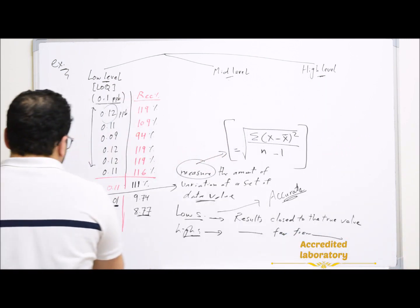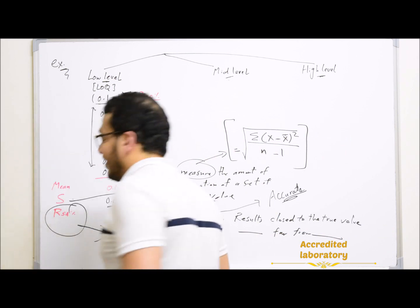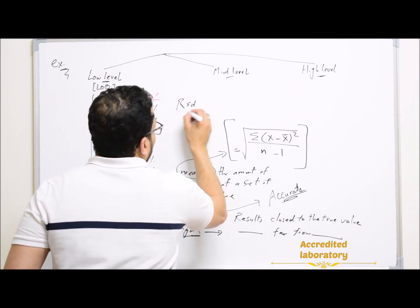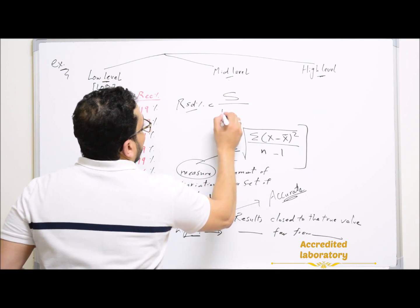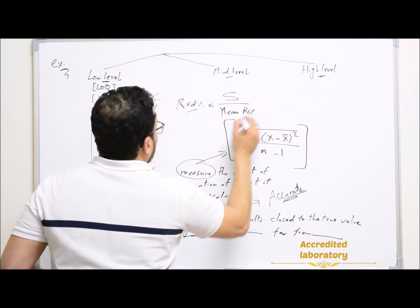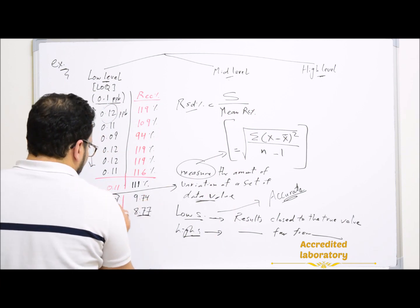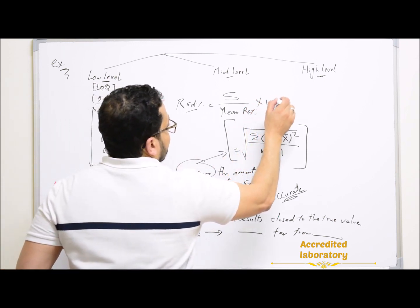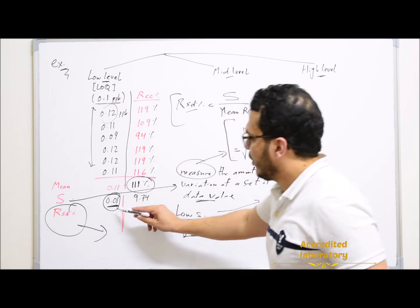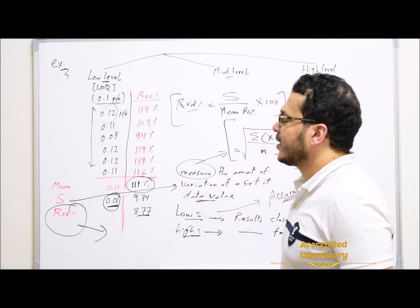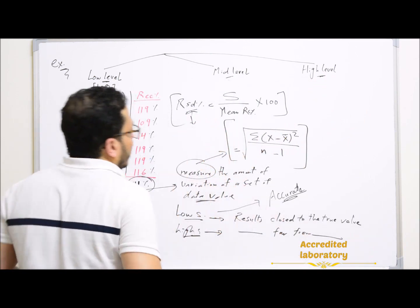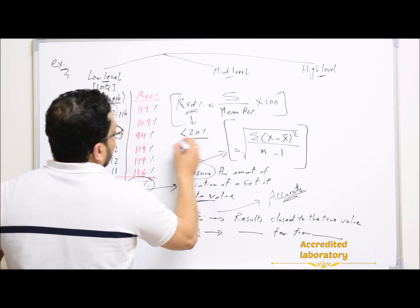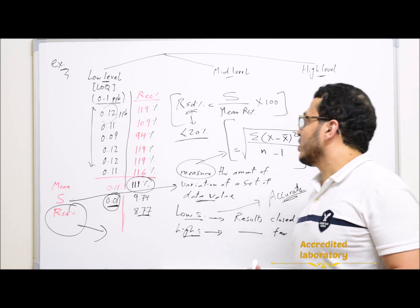Then we will calculate relative standard deviation, which is used to evaluate repeatability. Relative standard deviation equals standard deviation divided by mean recovery, multiplied by 100. According to our guideline, it should be less than 20% — it should not be higher than 20%.